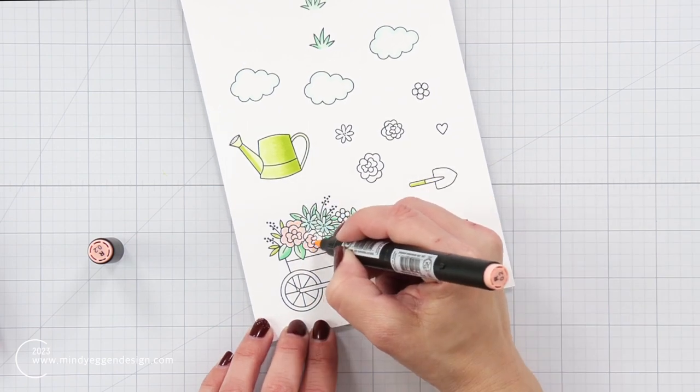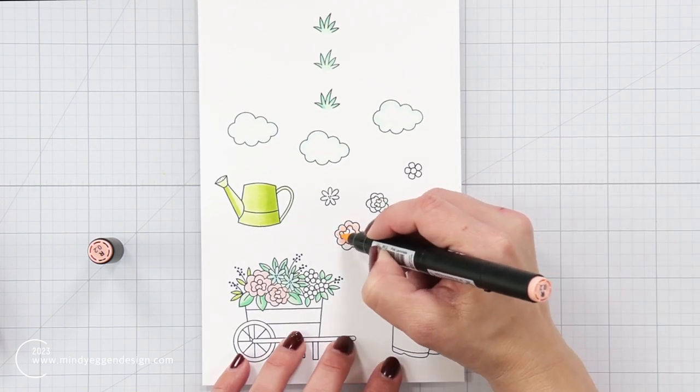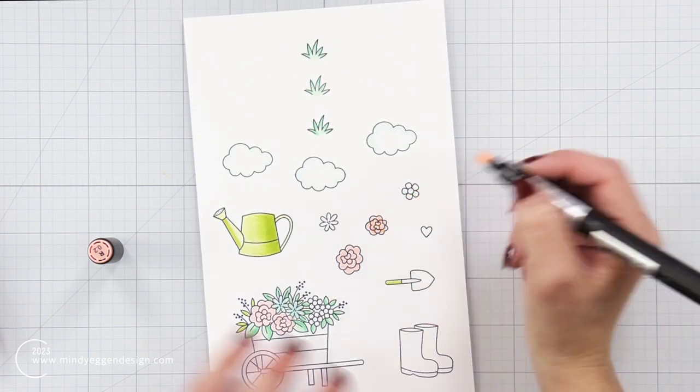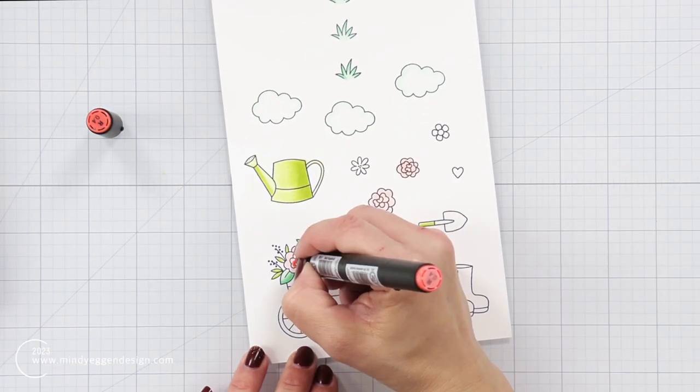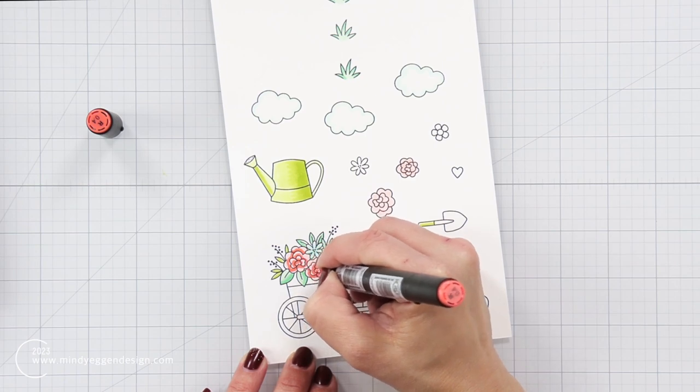This one, I'm kind of feathering that darker color out and I will blend that a little bit with that lighter color, mainly because that is such a big open area. Then I have these smaller flowers. Once again, I am just laying down my lightest color here